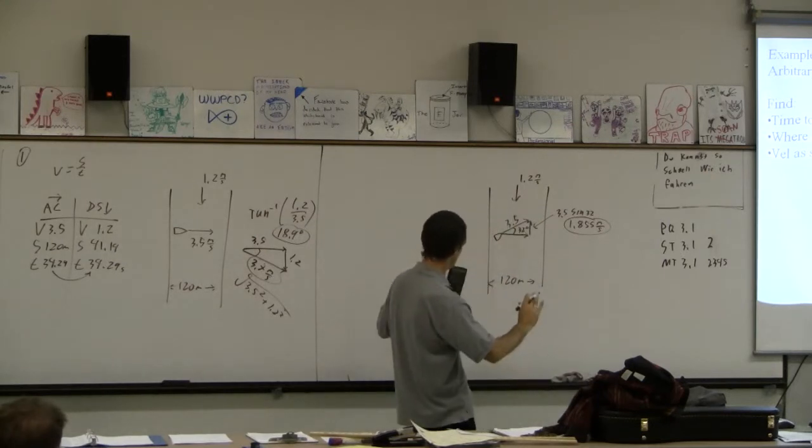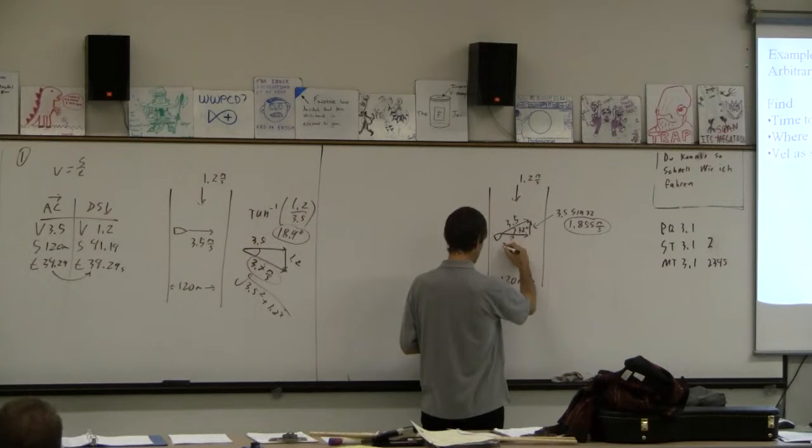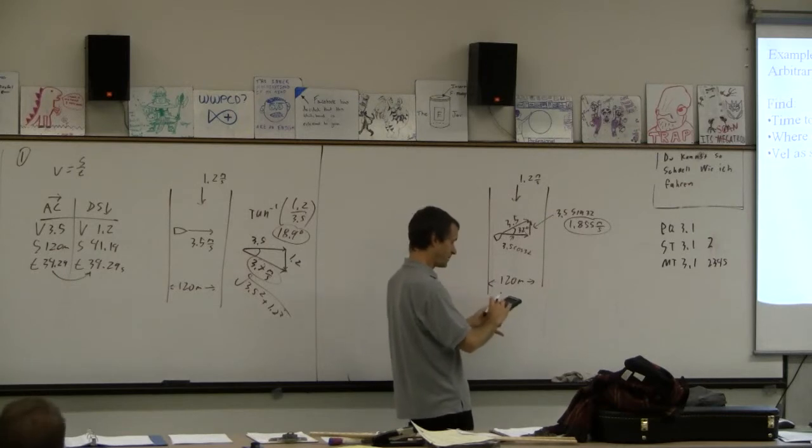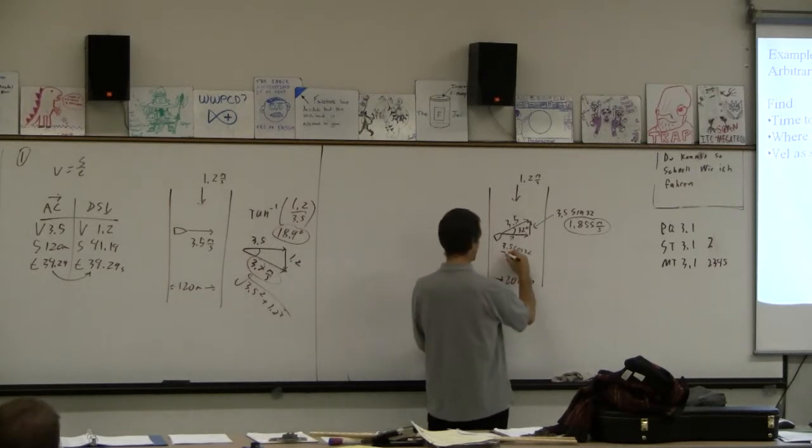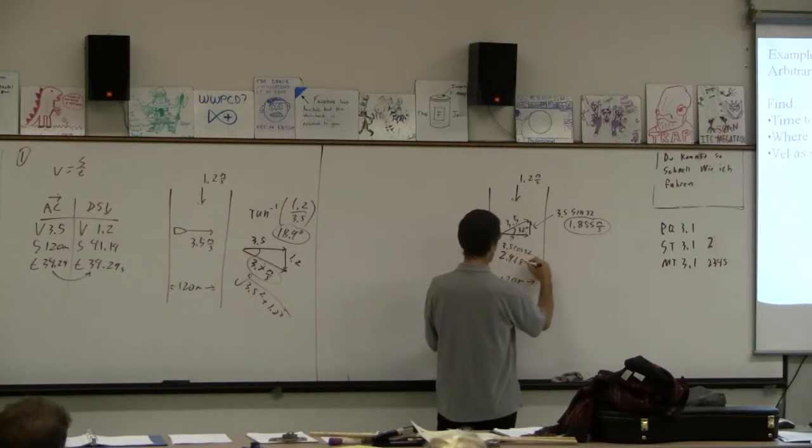So that's 1.855 meters per second. I'm carrying four sig figs because I have two. And then the across component is 3.5 cos 32. So 3.5 cos 32. That's 2.968.